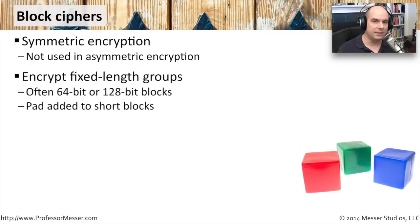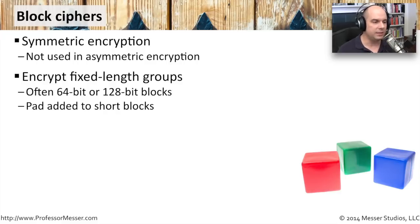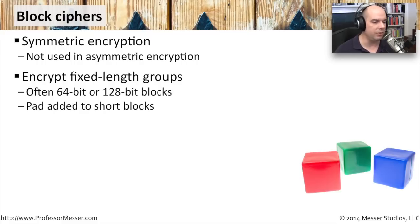As the name implies, a block cipher takes a fixed group of information and encrypts that fixed block all at one time. Usually these blocks are 64 bits or 128 bits long — a size that is predetermined so that you're able to keep it the same when encrypting and decrypting. Sometimes you'll have text that doesn't quite fill up the block, so occasionally you will pad that data because you really do need a full block of 64 or 128 bits to perform the encryption.